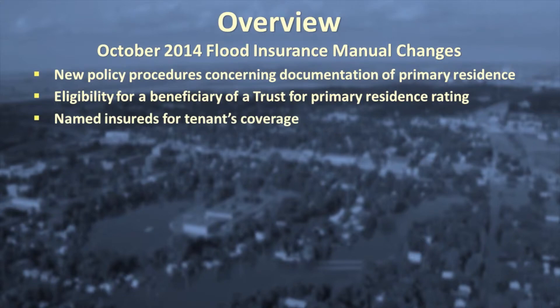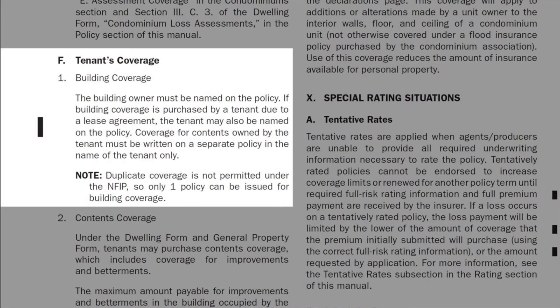Regarding changes in tenant's coverage: the building owner must be named on the policy for building coverage, even if the policy is paid for by a tenant due to a lease agreement. The tenant may also be named on the policy. The NFIP does not designate any of the named insureds as primary or secondary; the rules are intended to ensure that all parties with an insurable interest in the building are named on any claim settlement proceeds for building damages. However, coverage for contents owned by the tenant must be written on a separate policy in the name of the tenant only. Duplicate coverage is not permitted under the NFIP, so only one policy can be issued for building coverage.